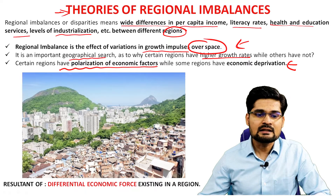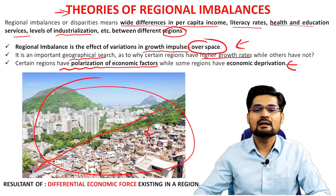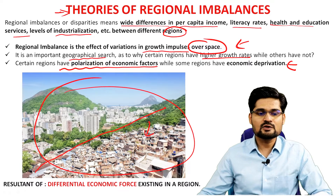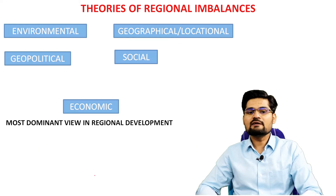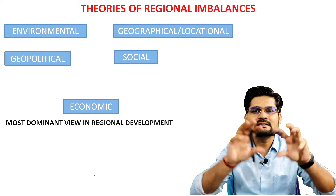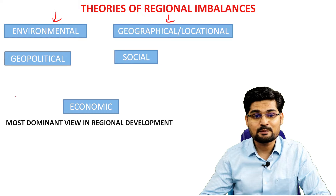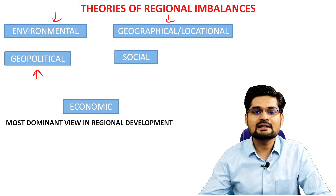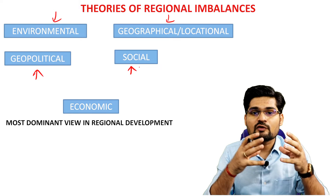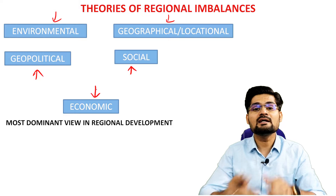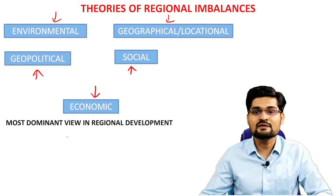Within the same region, some places get more attention while others lag behind. This disparity is commonly visible over space and is the resultant of differential economic forces. There are certain heads under which you can study these theories: environmental theories of regional imbalance, geographical or locational theories, geopolitical theories (part of geographical theories), and social theories. Regional development is mostly taken over by economists, so you'll find a lot of economic theory also studied under geography.